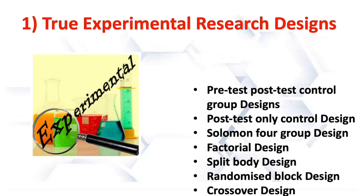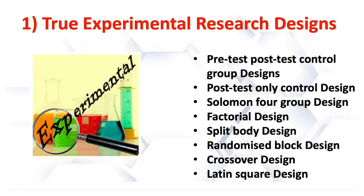In true experimental research designs we can see: pre-test post-test control group design, post-test only control design, Solomon four-group design, factorial design, split body design, randomized block design, crossover design, and Latin square design. These are the designs found in true experimental research designs.